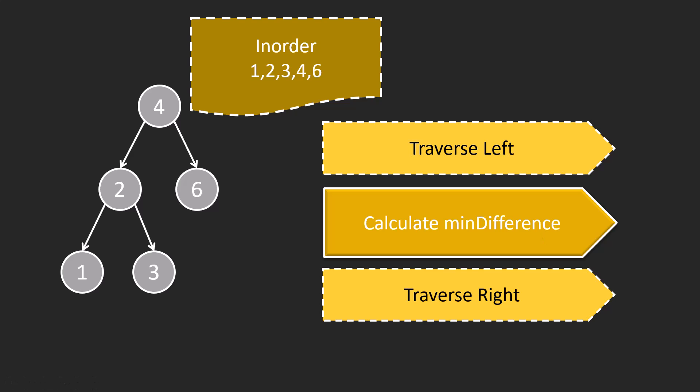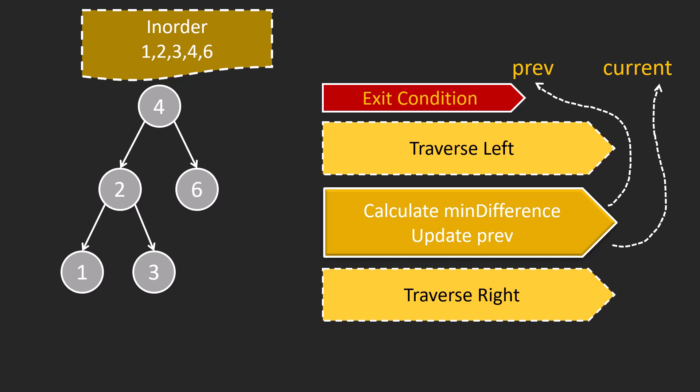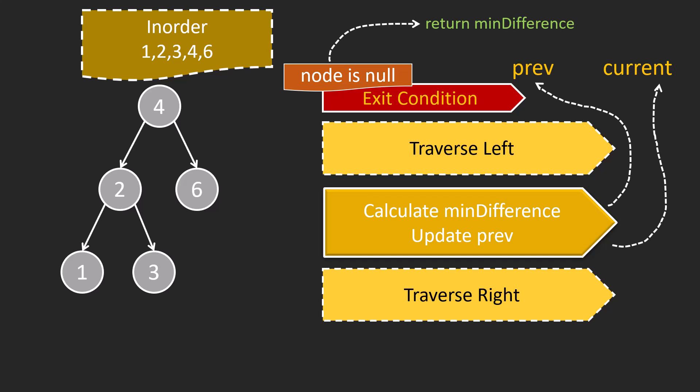In the processing part, we will be calculating and setting the minimum difference found up to that point. The difference will take the previous node and the current node value into account — the answer is the absolute difference between the previous and current node value. After that, we update the previous for the next iteration. For a recursive solution we also need an exit condition: if the node is null, we return the minimum difference.